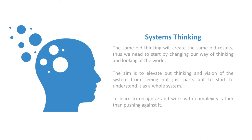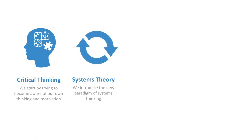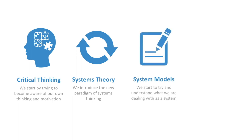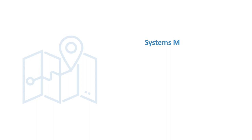It starts with critical thinking — becoming aware of our ways of thinking and motivations. Systems change is as much a personal change as it is about change out there in the system. We need to be reflexive about how our ways of thinking and motives influence the systems change process. We introduce the new paradigm of systems theory, going through models including holistic thinking and synthetic thinking, systems modeling, and complexity theory — gaining an appreciation for how complex systems work and how we might work with complexity rather than push against it.